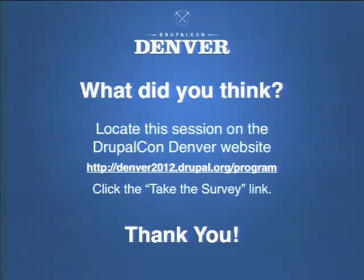The hook for switching themes by content type is hook_custom_theme — that's the one being referenced. That's Frederick Mitchell, who also works for Phase 2. He's going to write a post about that. Anybody else have questions? I appreciate your time — thank you and enjoy the rest of DrupalCon.